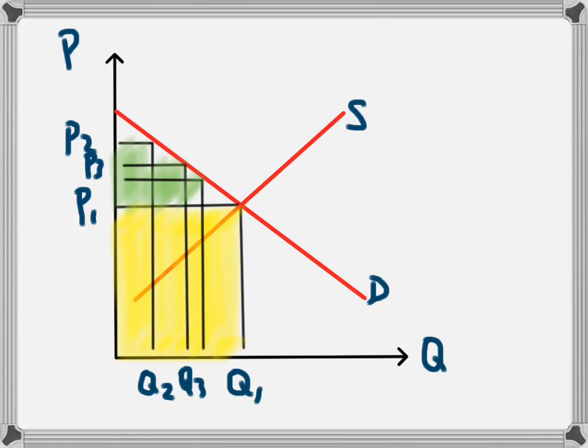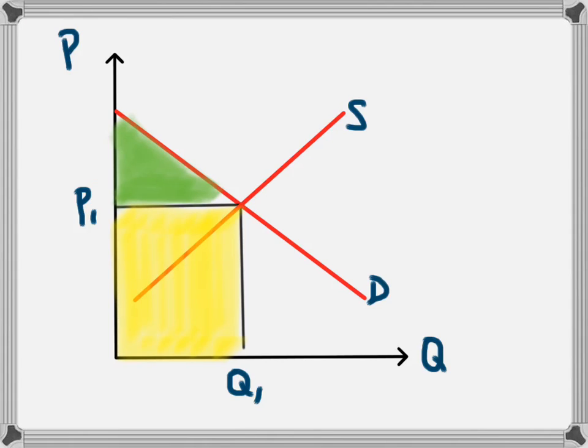And if we were to take all of the surpluses for all of the consumers who are willing to pay that higher price, we end up with this green triangle here, which we'll just make a little bit clearer. So the total consumer surplus, the amount of revenue which consumers are willing to give to the business for these particular products, but don't have to, is equal to that green area there.